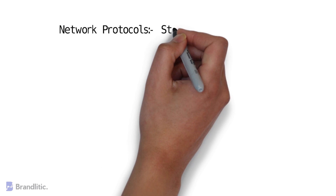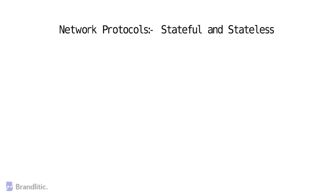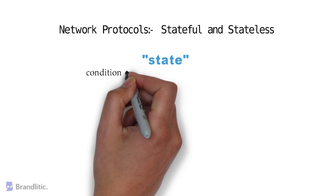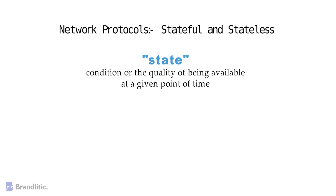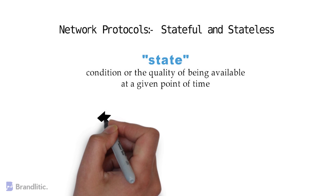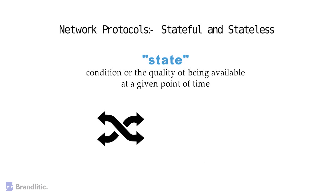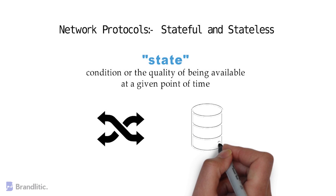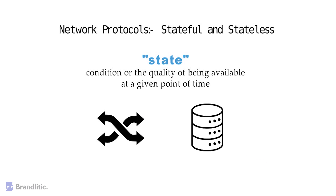Both stateful and stateless are the two types of network protocols. The word 'state' here refers to the condition or the quality of being available at a given point of time. Whether a protocol is stateful or stateless depends on the length of the interaction a client has with it, and how much of the information is stored.